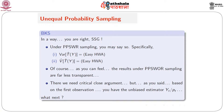The results under without replacement sampling are far less transparent. Under without replacement sampling, even the computation of pi_i and pi_ij themselves are quite different. Based on the first observation we have no problem — we have the unbiased estimator yt by pt. But the next observation will not behave identically to this if it is without replacement. That's the problem.